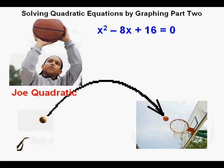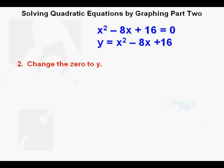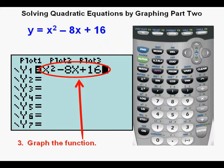Let's look at this next equation: x squared minus 8x plus 16 equals 0. To solve this equation by graphing, step 1 is not needed since the right side is already zero. We change the equation to a quadratic function by changing the 0 to y, and Joe flips sides to his preference. Step 3: graph the function. We place the function in the y equals function editor view and graph it.